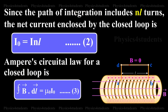Since the path of integration includes N L turns, the net current enclosed by the closed loop is I naught equals I N L. This is equation number 2.